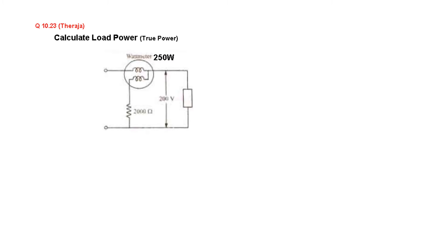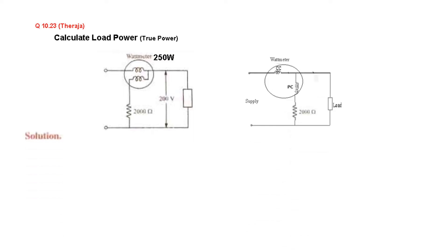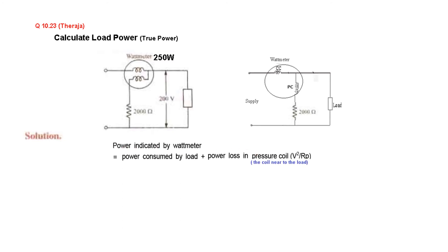Let's take a simple example from the Thiraja book. Calculate the load power, also called true power. The wattmeter reading is given as 250 W, and the voltage across the potential coil — which is also the voltage across the load — is 200 V. We will use the formula: power indicated equals load power plus pressure coil power, since the pressure coil is nearer to the load.